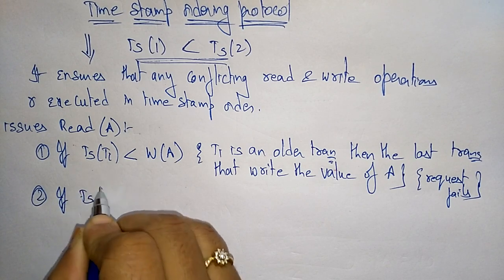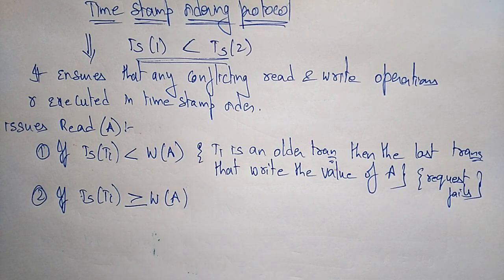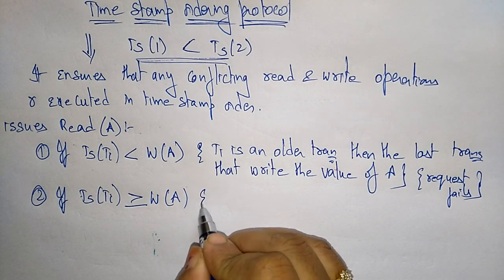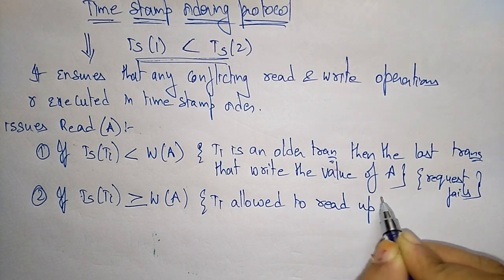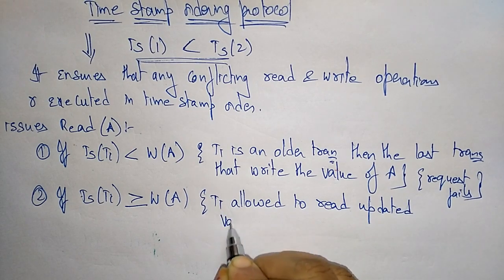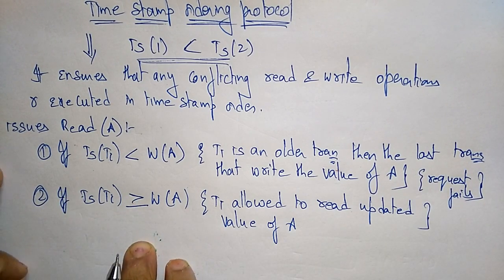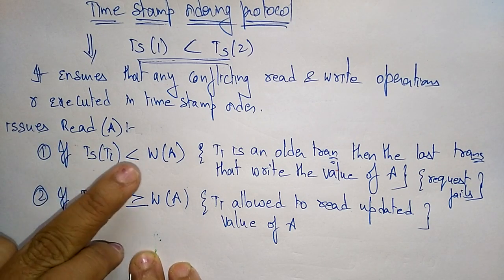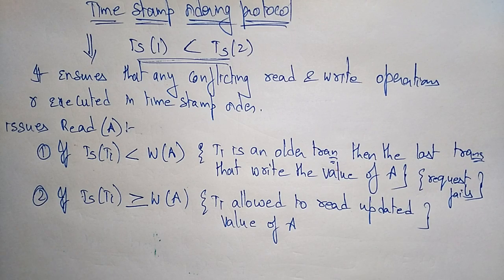The second condition for Read(A) is: if TS(TI) is greater than or equal to W-TS(A), then TI is allowed to read the updated value of A. So these are the two conditions — TS(TI) less than W-TS(A) causes failure, and TS(TI) greater than or equal to W-TS(A) allows the read.